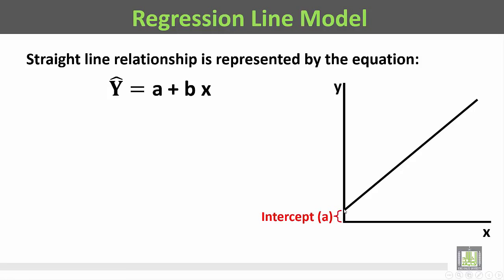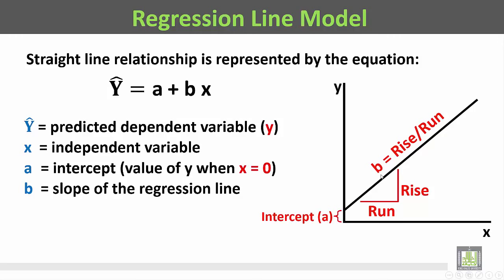نقطة التقاء خط الانحدار بالمحور الرأسي — المسافة بينها وبين الصفر هي قيمة الانترساب A. B is equal to rise over the run. B أو الانحدار — slope — هي قيمة المقابل على المجاور، أي rise and run.